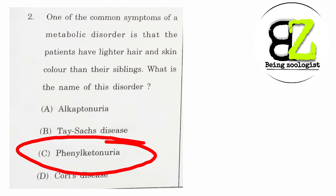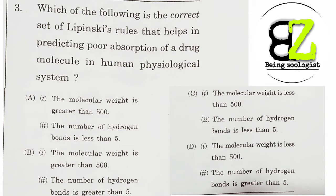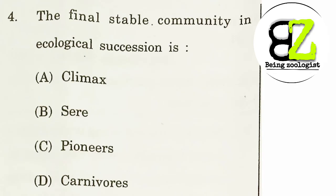Next: which one of the following is the correct set of Lipinski's rules that helps in predicting poor absorption of a drug molecule in the human physiological system? The correct option is C — molecular weight less than 500 and number of hydrogen bonds less than five. So remember: Lipinski's rule says molecular weight should be less than 500 and hydrogen bonds less than five.